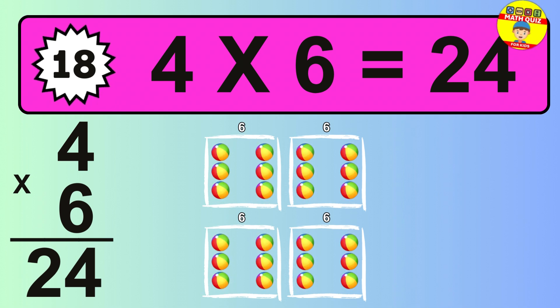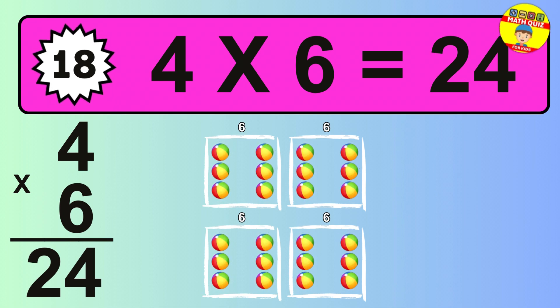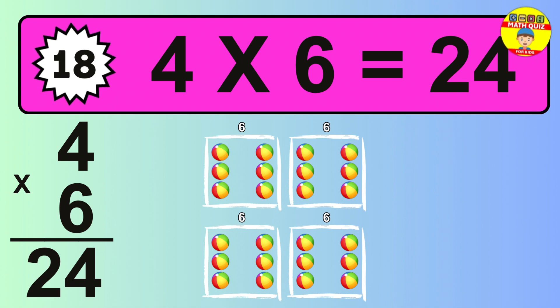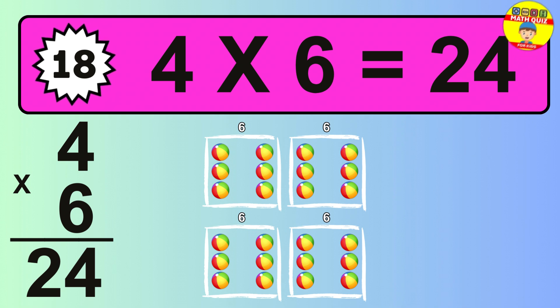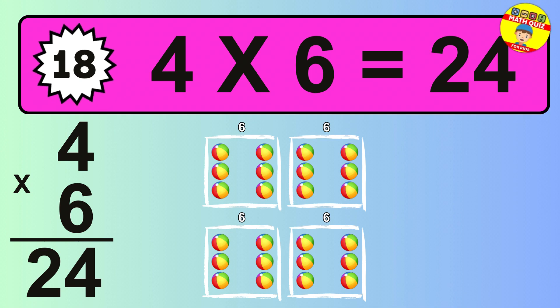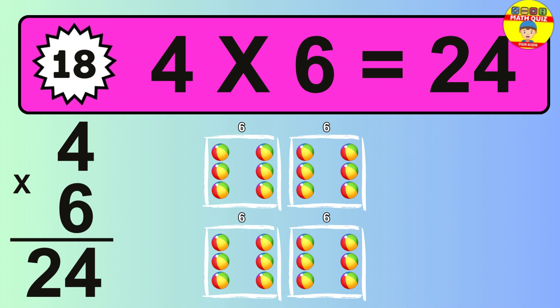The answer is 4 times 6 is 24. To calculate, we have 4 groups with 6 balls each one. So, how many balls do we have? 24 balls.